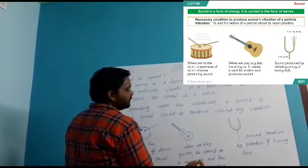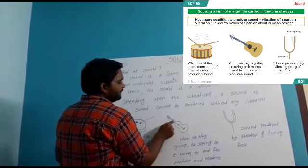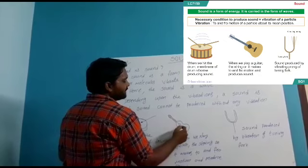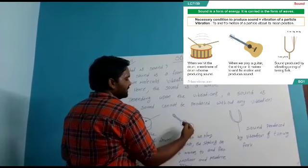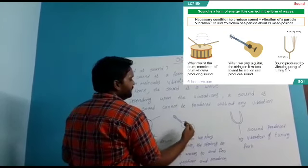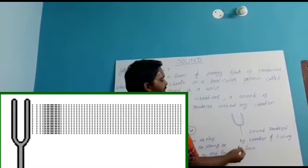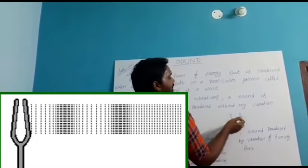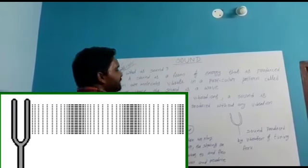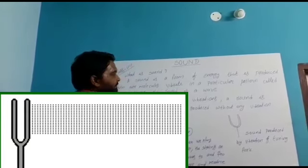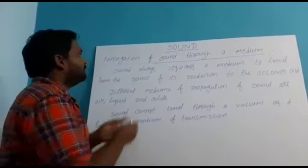When we play the guitar, this string moves in to-and-fro vibrations, and because of those vibrations we can listen to the guitar sound. Another example is a tuning fork — sound is also produced by the tuning fork because of vibrations. These are some examples of sound produced depending on vibrations.